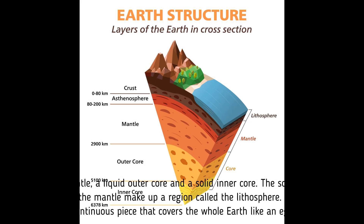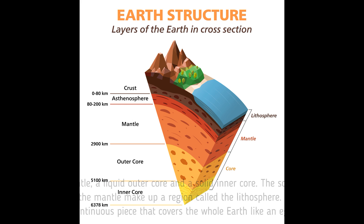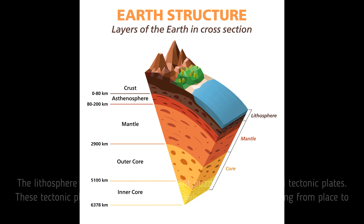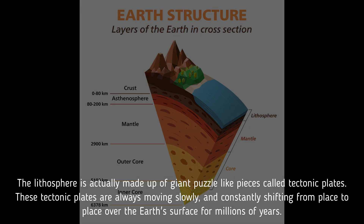The solid crust and the top stiff layer of the mantle make up a region called the lithosphere. The lithosphere is not a continuous piece that covers the whole earth like an eggshell — it is actually made up of giant puzzle-like pieces called tectonic plates.